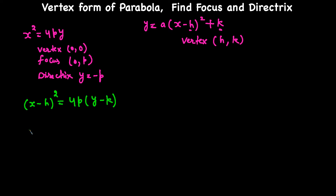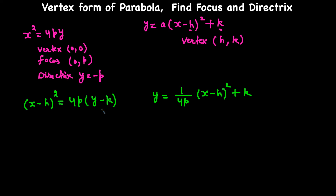If we want Y on one side, we divide both sides by 4P and add K, giving us Y = (1/4P)(x - h)² + k. So A = 1/(4P), and you can easily find P from this. This lets us convert between the two forms of the vertex equation.